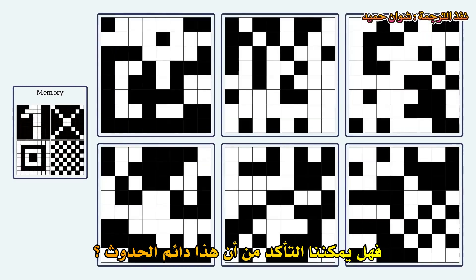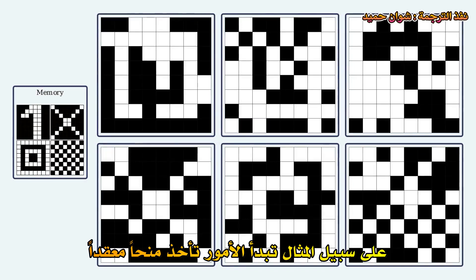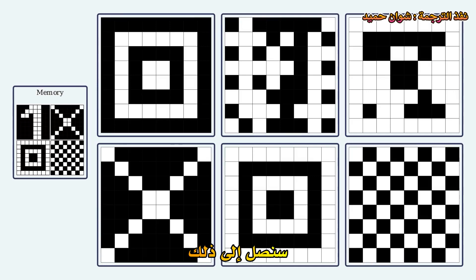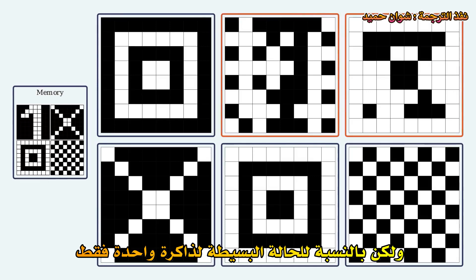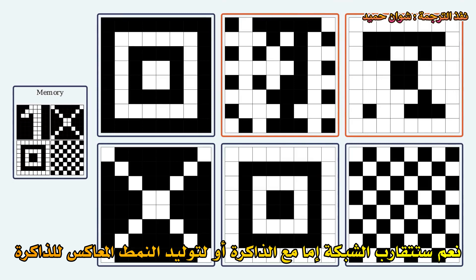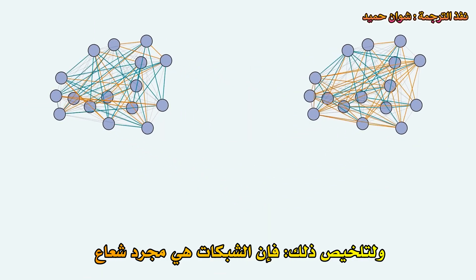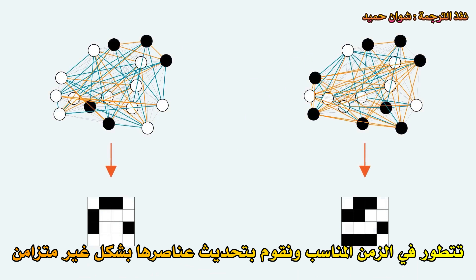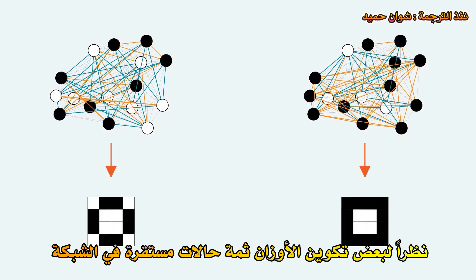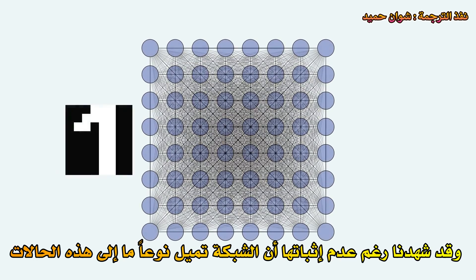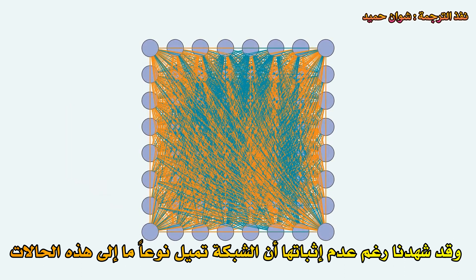So can we be sure that this always happens? Well, no. For example, things start to get complicated when there is more than one memory stored in the network. But for the simple case of just a single memory, the network will converge to either the memory or its anti-memory, or as an edge case, to the completely inactive state. So let's recap: networks are just vectors that evolve in time, and we update their elements asynchronously. Given some configuration of weights, there are stable states in the network which we call memory states, and the network is attracted to these states.